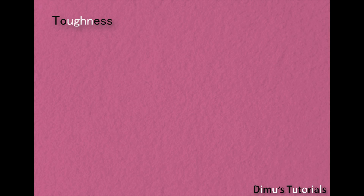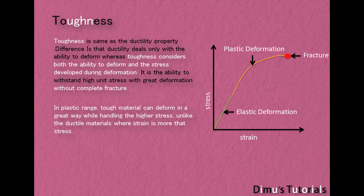Toughness. Toughness is similar to ductility. The difference is that ductility deals only with the ability to deform, whereas toughness considers both the ability to deform and the stress developed during deformation. It is the ability to withstand high unit stress with great deformation without complete fracture in the plastic range. A tough material can deform greatly while handling higher stress, unlike ductile materials where strain is more dominant than stress.